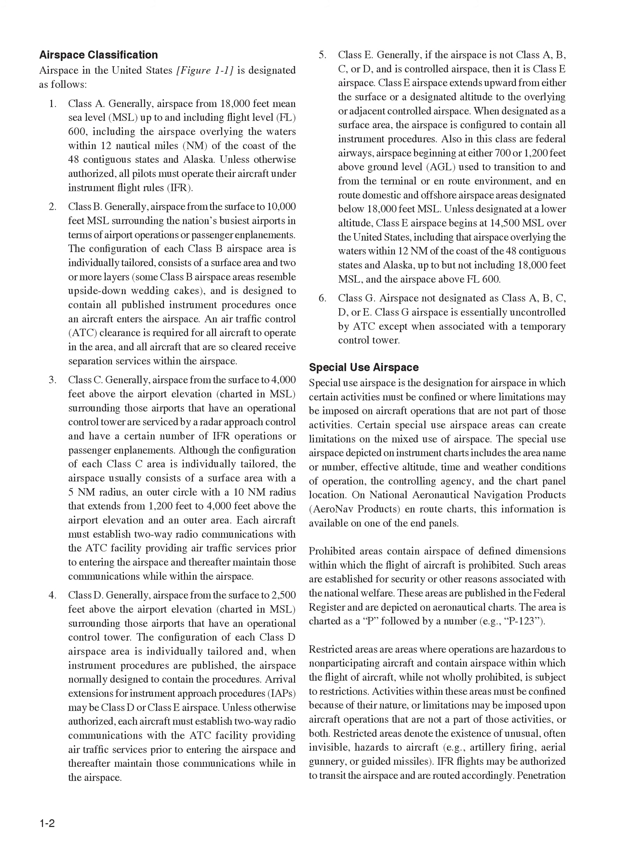Special Use Airspace is the designation for airspace in which certain activities must be confined or where limitations may be imposed on aircraft operations that are not part of those activities. Certain Special Use Airspace areas can create limitations on the mixed use of airspace. The Special Use Airspace depicted on instrument charts includes the area name or number, effective altitude, time and weather conditions of operation, the controlling agency, and the chart panel location. On National Aeronautical Navigation Products, AeroNav Products, on-route charts, this information is available on one of the end panels. Prohibited areas contain airspace of defined dimensions within which the flight of aircraft is prohibited. Such areas are established for security or other reasons associated with the national welfare, published in the Federal Register, and depicted on aeronautical charts.